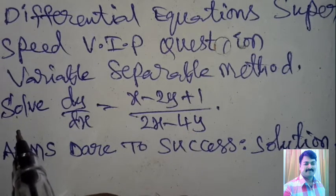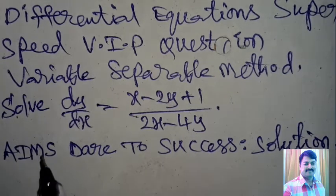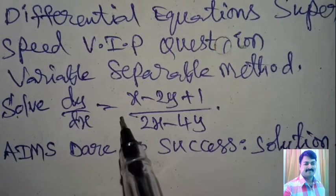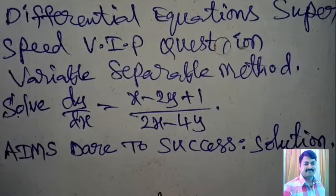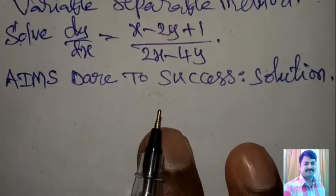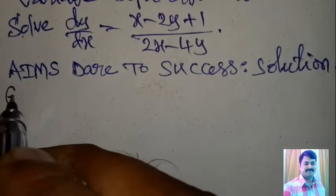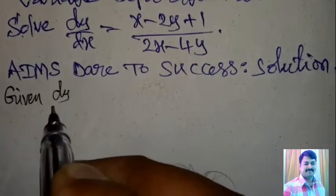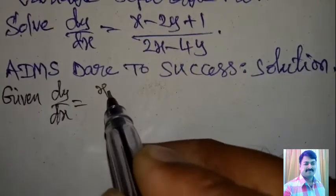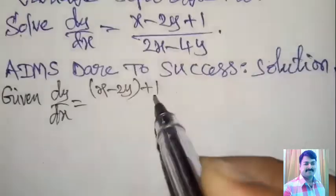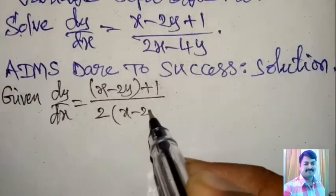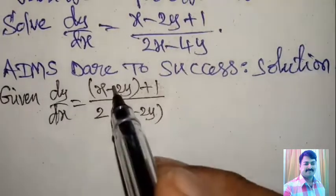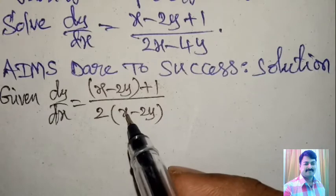Our question is: solve dy/dx equals (x minus 2y plus 1) divided by (2x minus 4y). Starting the question — given dy/dx equals (x minus 2y plus 1) divided by (2x minus 4y). I want to take 2 as common from the denominator. The common value is x minus 2y — you can check that x minus 2y is common from both the numerator and the denominator. I will call this equation one.